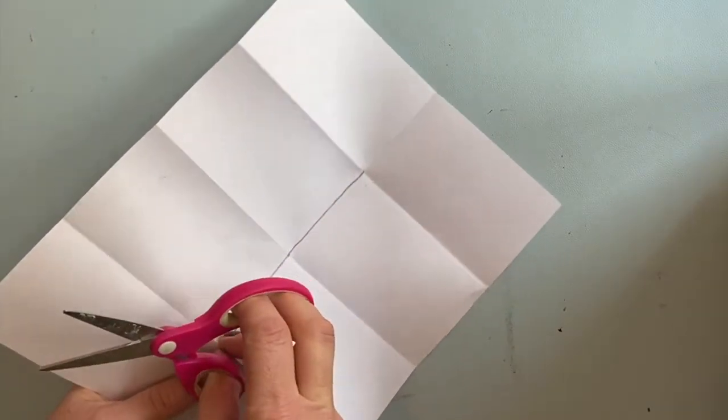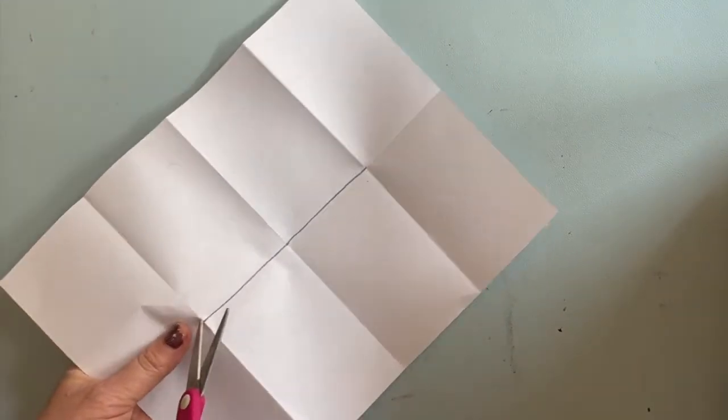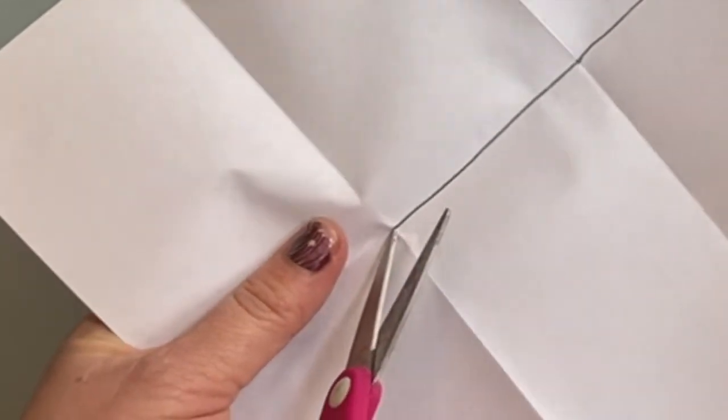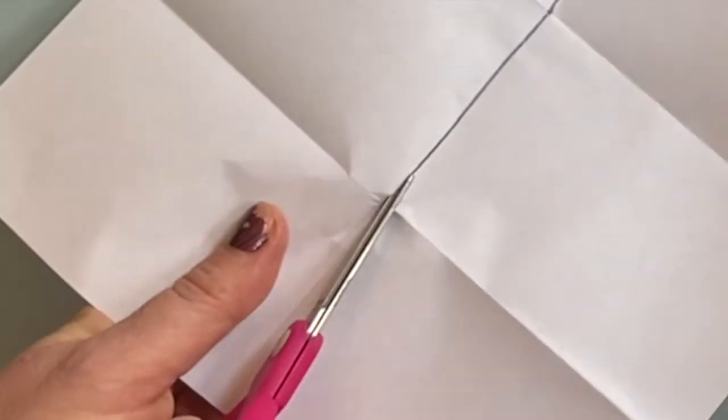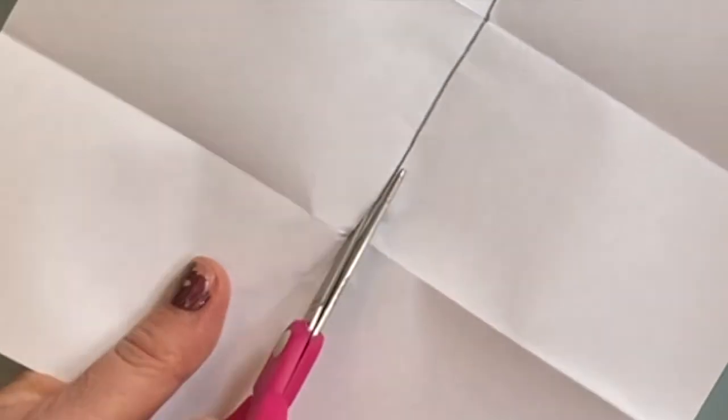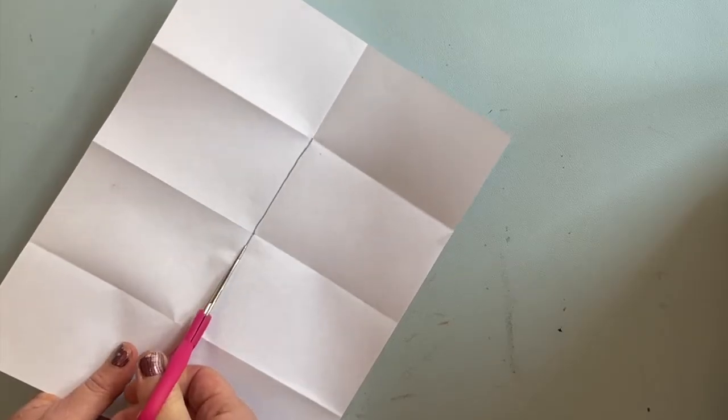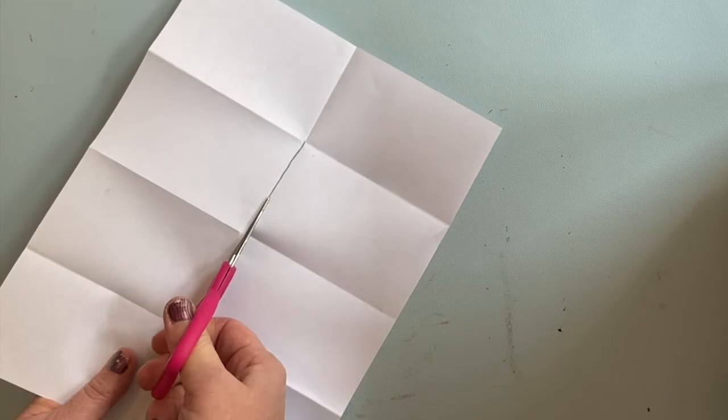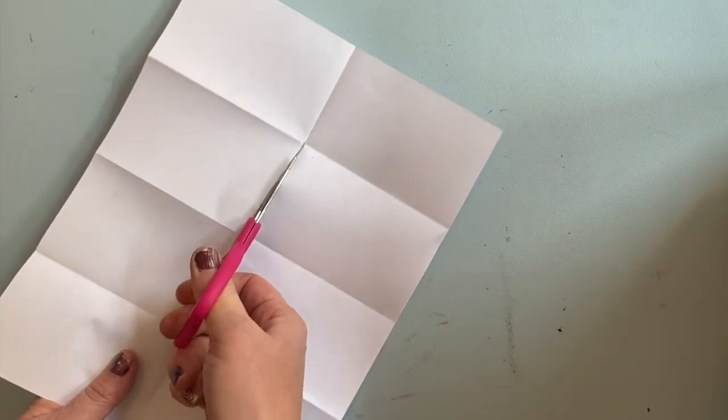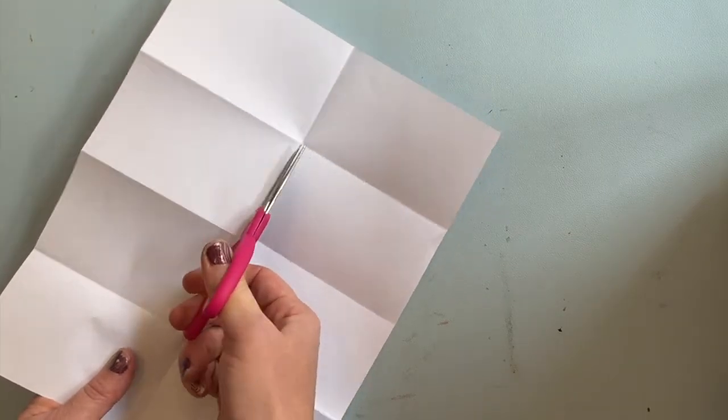This part you have to be very gentle. To get your scissors into this piece of paper, slowly and very carefully poke your scissors through the paper and carefully cut across this line. Once you get to this part, stop. Pull your scissors out.